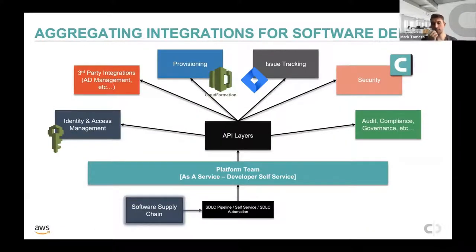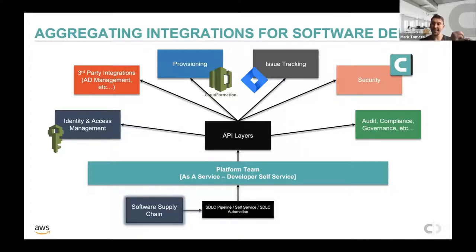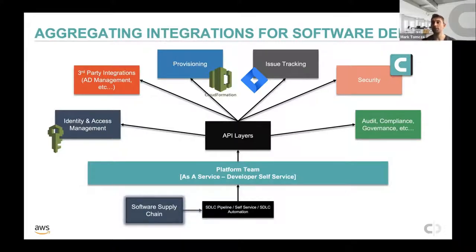At a higher level, the platform team takes all the pieces needed to get software out the door. Every application has a build, a test, a deploy, and different gating mechanisms. What this represents are the different pieces to get that stuff out the door. In order to scale, they create APIs that represent those integration points, which are then ingested into the pipeline itself — almost like glue consumed by the application teams. As an application owner, your dev commits, they consume that pipeline with all these different integration points, and your application goes through all those separate business processes to ensure it's solidified and protected against future attacks.